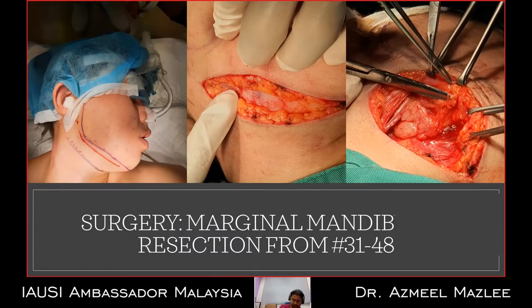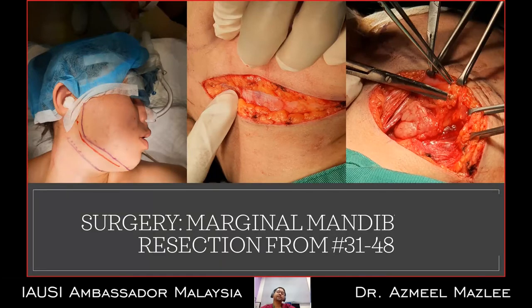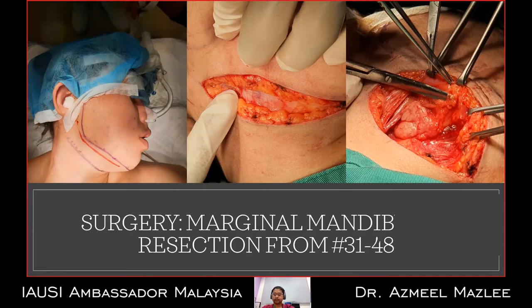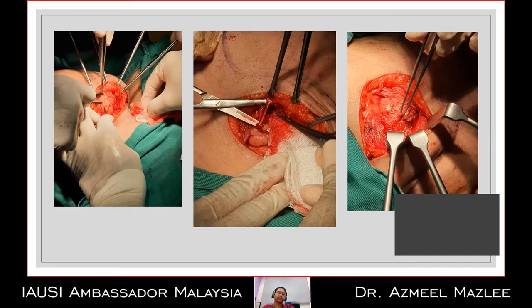Surgery was planned for marginal mandibular resection from 3.1 to 4.8, using an extraoral submandibular approach on the right side. We started with incision of the skin, followed by incision through the platysma muscle, going deeper. We managed to preserve the marginal branch of the mandibular nerve, the facial vein, and the facial artery, and also removed part of the surrounding lymph nodes.